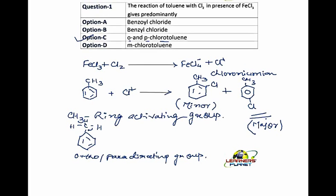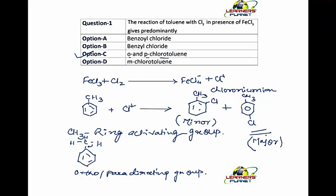Had it been a ring-deactivating group, the substitution would have taken place at the meta-position. Ring-deactivating groups like the nitro-group or benzaldehyde — the substitution will take place at the meta-position. But if there is a ring-activating group, the substitution takes place at the ortho- and para-positions, and the para-product is the major product.